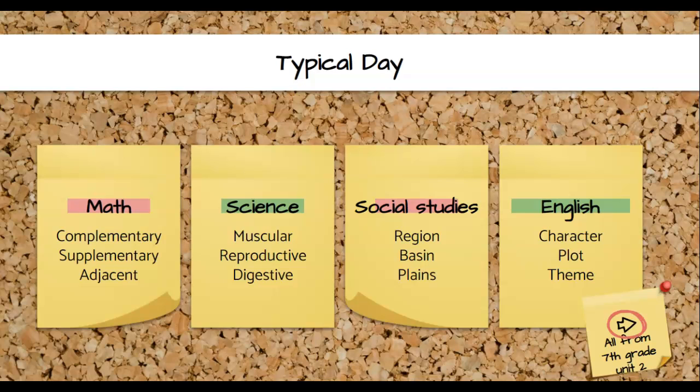Then we go to social studies where it's region, basin, and plains. And finally they go to English and they learn character, plot, and theme. Just stop for a minute and think about the word theme. What does it really mean? It's not a simple definition, and it's often not easily taught with one exposure. Think about how much they are exposed to that word in their years of instruction. Even as an adult, I'm still working on that word. All of this they do before lunch.